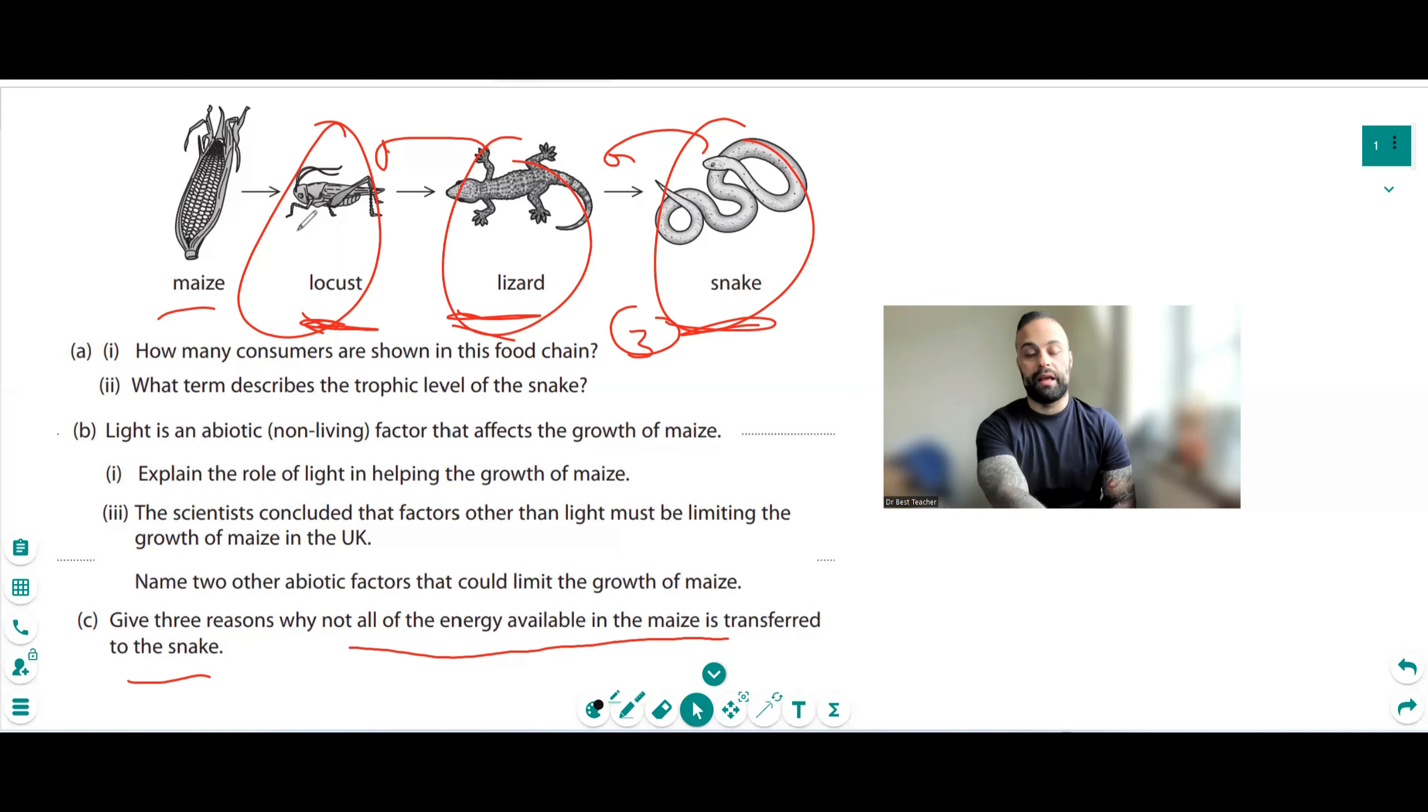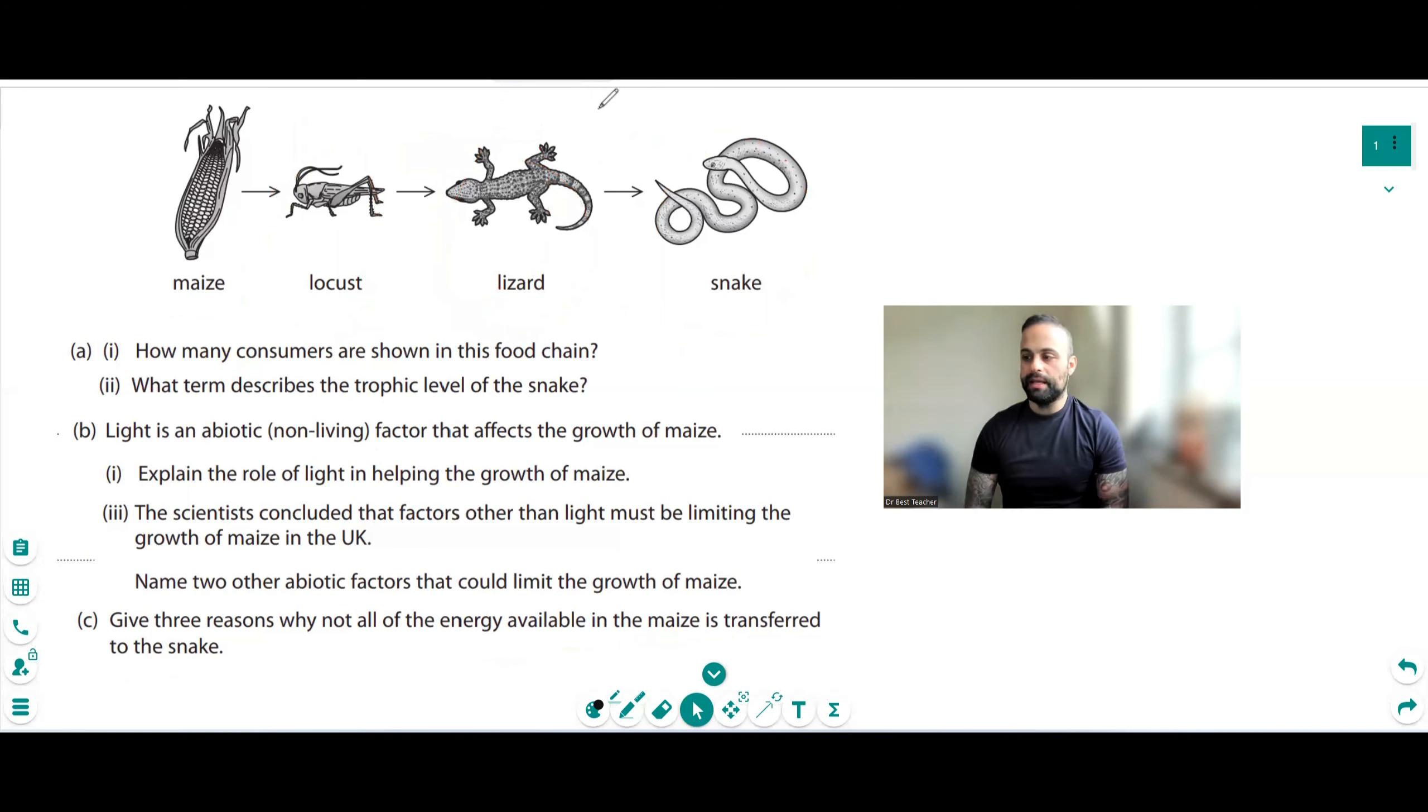Another thing is some of the food is lost in feces when you go up the food chain, as well as urine, or you could even say urea. And not all animals are eaten. Some of them die from natural causes. So before the energy could go to the snake, maybe some of the lizards die. There could be certain diseases. Bones cannot be eaten. Teeth cannot be eaten. Roots cannot be eaten. So all of these parts are going to be left behind and not going to be transferred to the actual snake.